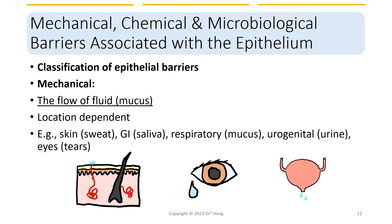Let's look at the first category of epithelial barriers: mechanical. The mechanical barriers include the physical layers as well as the flow of fluid or mucus, depending on location. For example, on the skin we have sweat; in the GI tract we have saliva; in the respiratory system we have mucus; in the urogenital area we have urine; and in the eyes we have tears. They all provide a constant flow that can help eliminate pathogens that adhere to those areas.